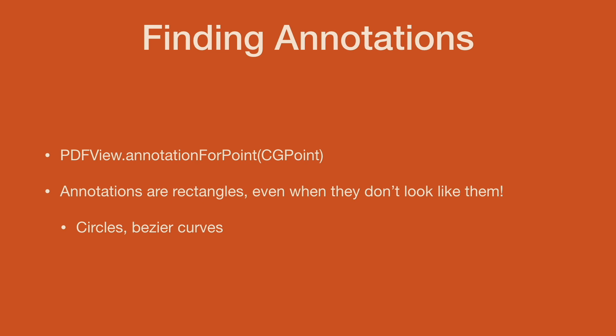Finding annotations is useful if you want to know whether the user is tapping on an annotation or somewhere else on the PDF page. In one application, if the user tapped on a text field I wanted them to edit it, but if they tapped somewhere else I wanted to draw freehand on the PDF. Keep in mind that PDF annotations are always rectangles in their organization, even if they don't look like it — you can have Bezier curves and circles. If large annotations overlap, this will only give you back the topmost annotation, and you'll need extra work to figure out the ones underneath.